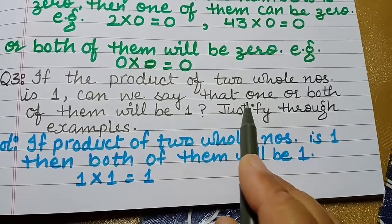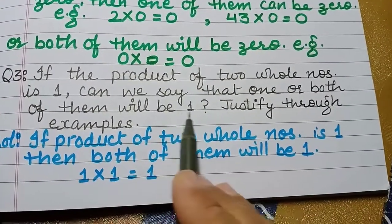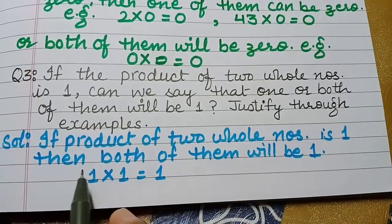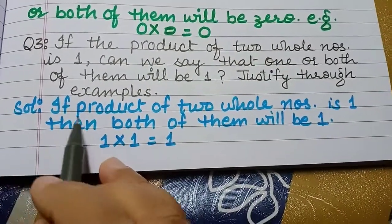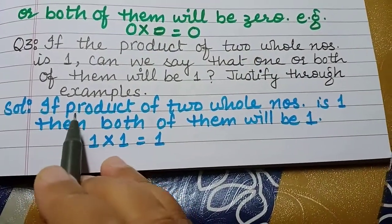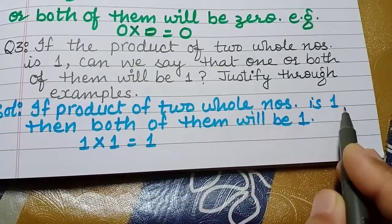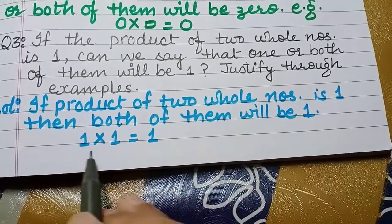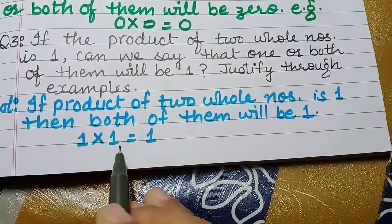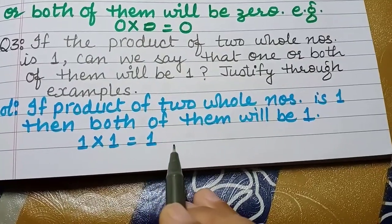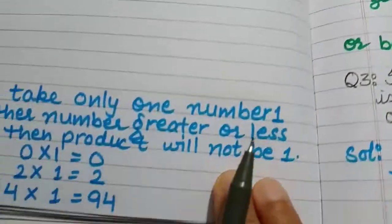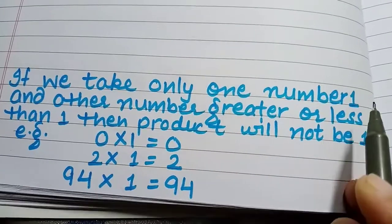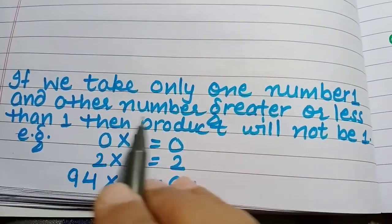Question number 3: if the product of two whole numbers is 1, will both of them be 1? Can we say that one or both of them will be 1? Justify through examples. Solution: if the product of two whole numbers is 1, then both of them will be 1. For example, 1 into 1 is equal to 1.